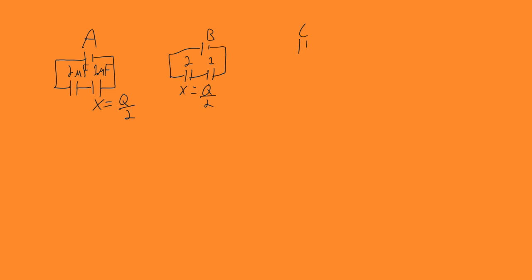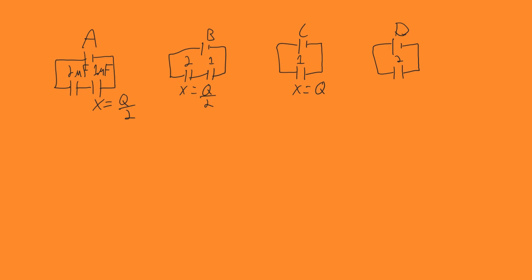For C, now we've got to be careful. Since the capacitance is changing — we have just one capacitor — the total voltage is going to drop across this one, so it's going to have a charge of Q. Now if we move over to D, we have the same circuit but the capacitor has twice the capacitance. Since it has twice the capacitance, the voltage drop is the same as on C, but the capacitance is twice as large, which means the charge is going to be twice as large. So here we're actually going to have 2Q.